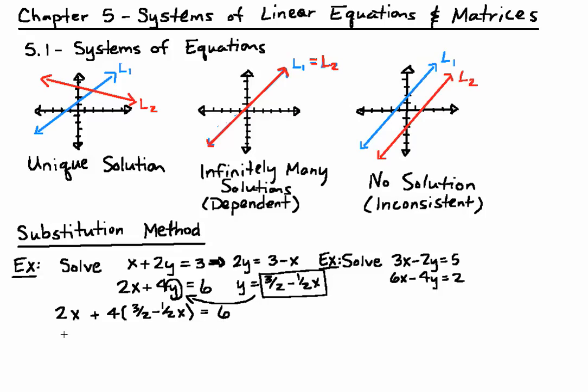And now we follow the same procedures as we did in the other example. We distribute 4 times 3 halves. This will equal 6. 4 times negative 1 half x is negative 2x.